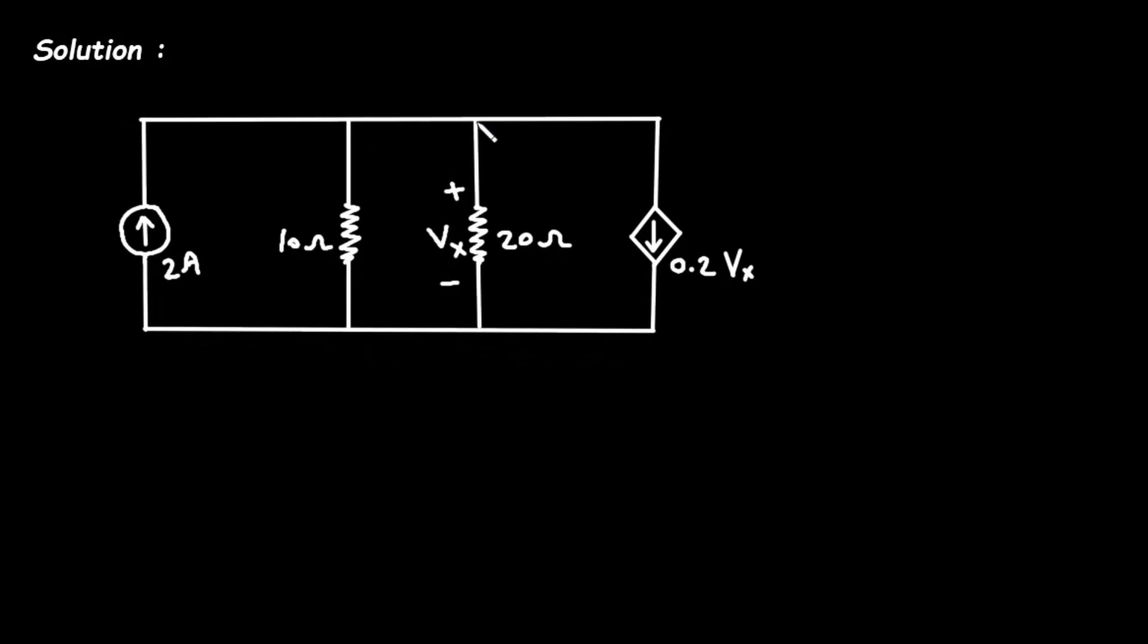Solution: First of all, let's assume this is node A. So this is one node, let's draw it like this - this is node A. And this is a reference node, let's say this is the ground node of zero voltage, this is the reference node.